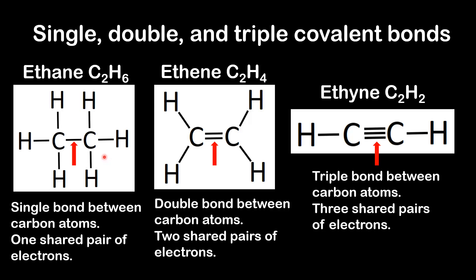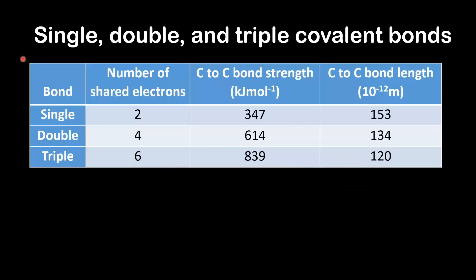So there we have examples of a single, a double, and a triple covalent bond. Next we look at the strength and length of single, double, and triple covalent bonds.